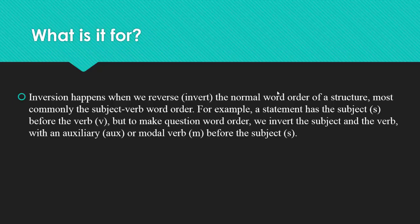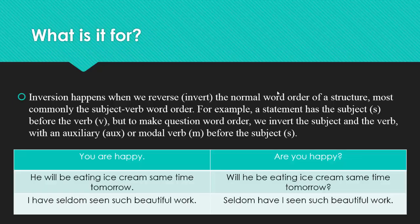What is it for? Inversion happens when we reverse the normal word order of a structure, most commonly the subject-verb word order. For example, a statement has the subject S before the verb V, but to make question word order, we invert the subject and the verb with an auxiliary OX or modal verb M before the subject S. For example, a simple sentence: You are happy. In order to make a question, we have to invert R and U. As a result, are you happy?